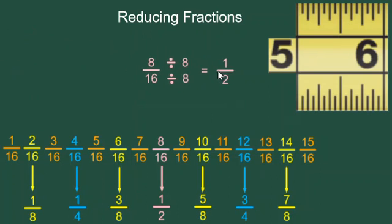Finally, here's the pink fraction: 8 over 16. 8 and 16 have a greatest common factor of 8. So I divide top and bottom by 8 and I get 1 half as my answer. 8 sixteenths is equal to 1 half inch.